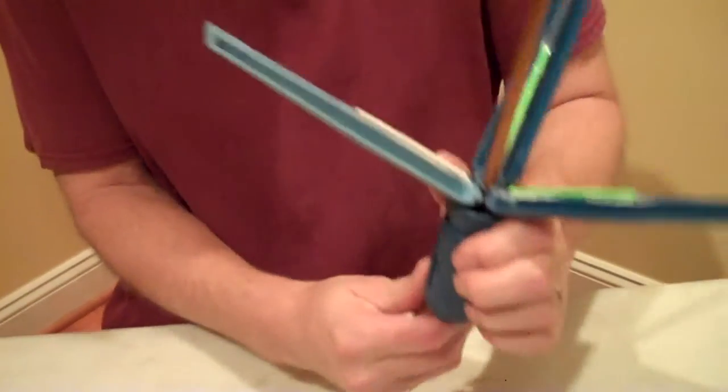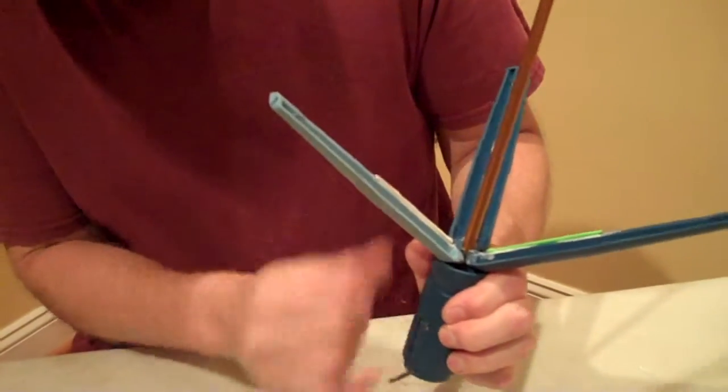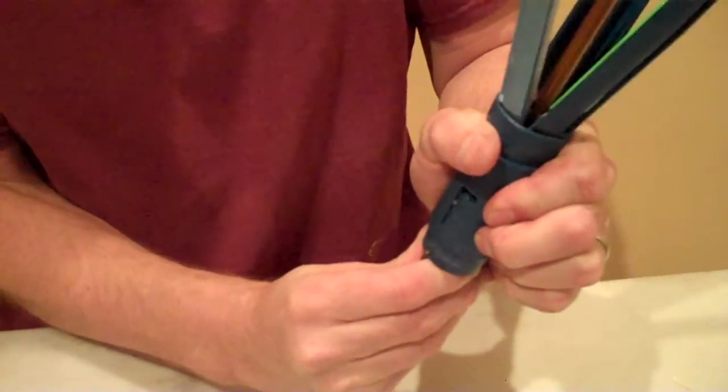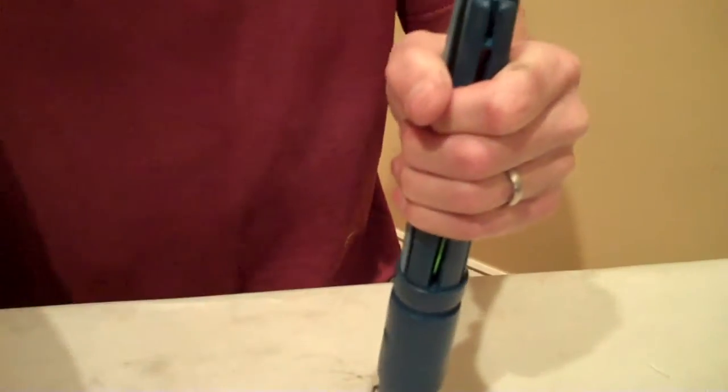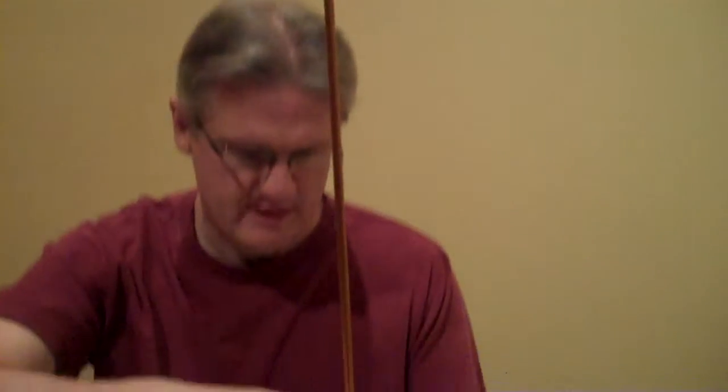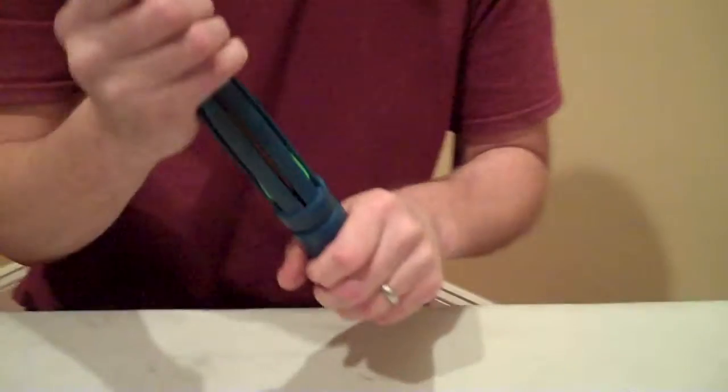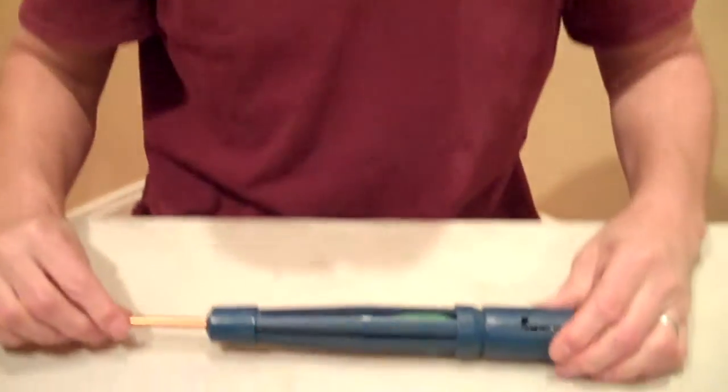Now what you do is the Easy Fletch Jig has a nock on it. You simply push that up. Turn that out. The arms will swing shut. You take your cap. Slide it over top. And down. And then it's going to sit and dry.